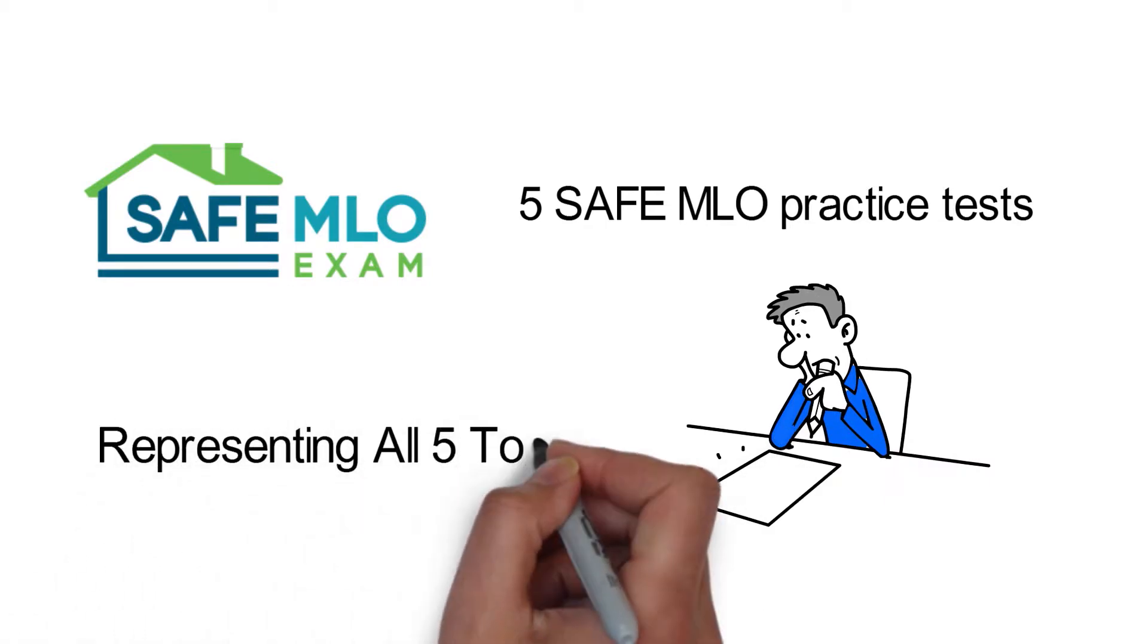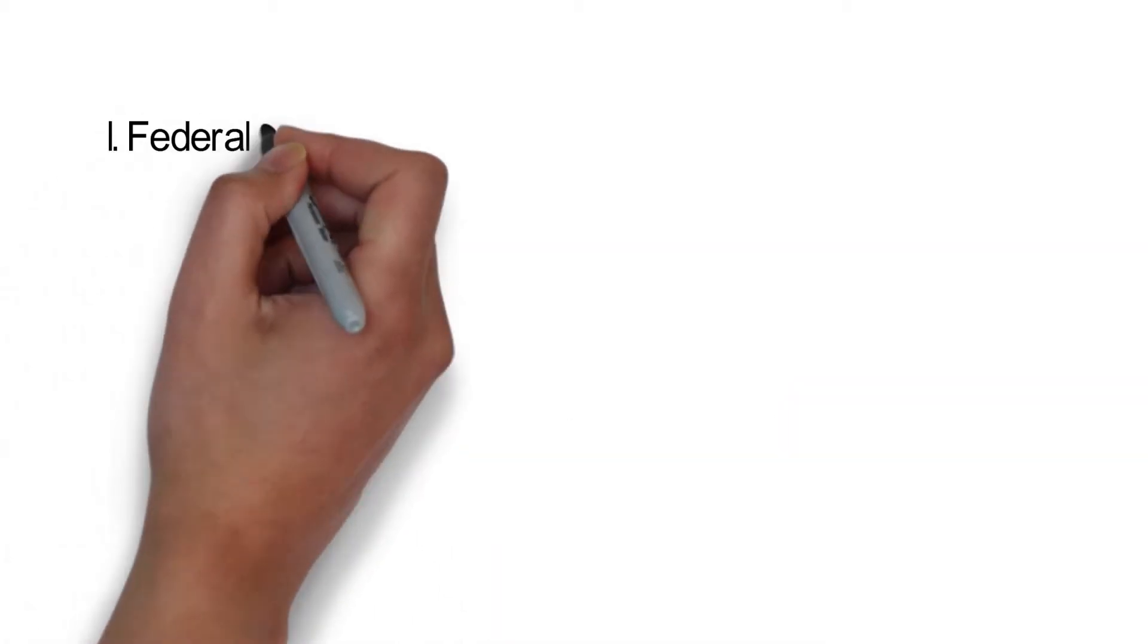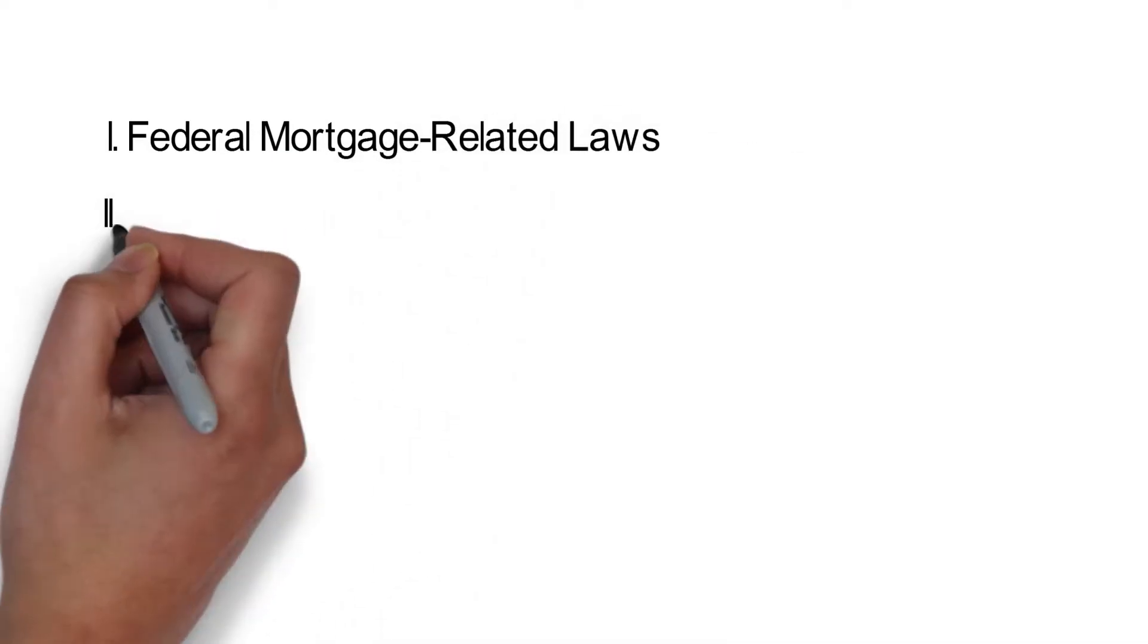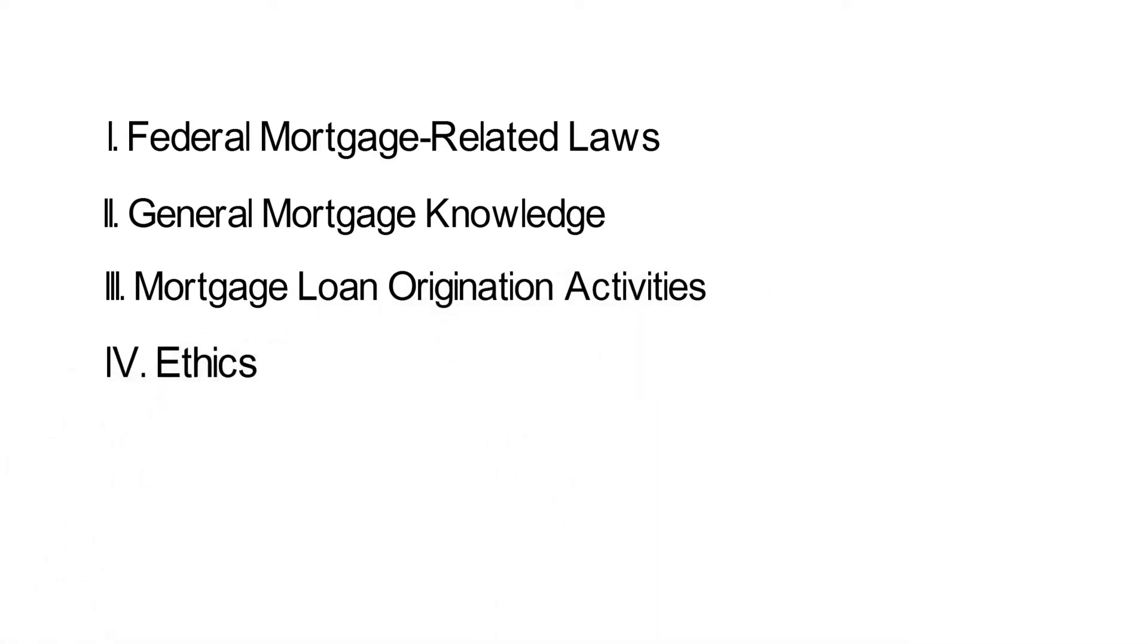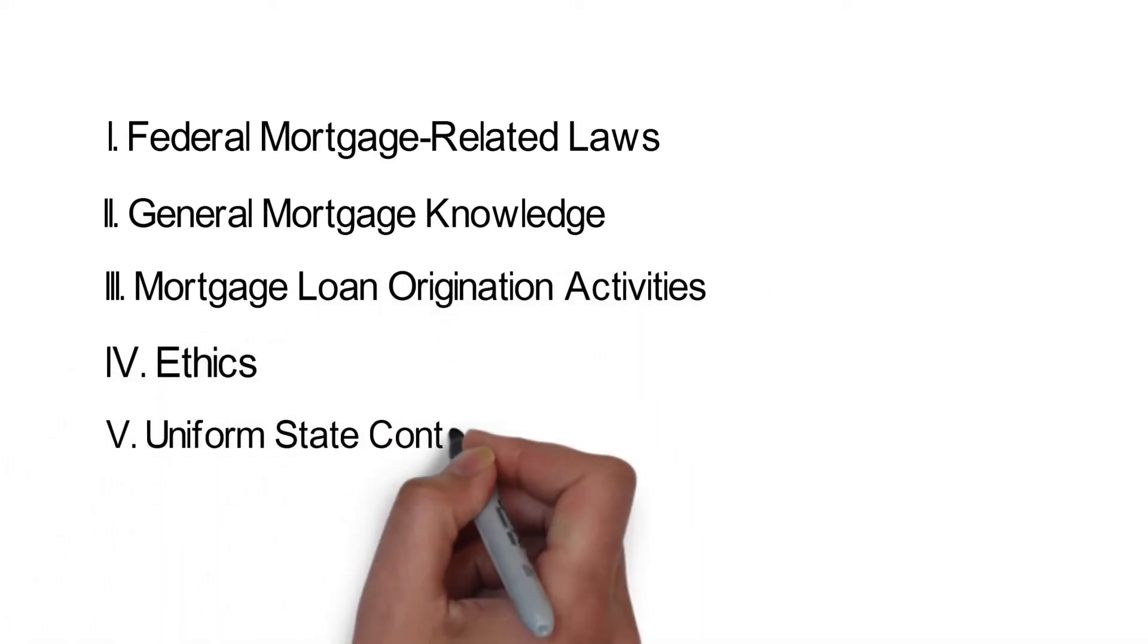proportionally representing all five topics: 1. Federal Mortgage Related Laws. 2. General Mortgage Knowledge. 3. Mortgage Loan Origination Activities. 4. Ethics. 5. Uniform State Content.